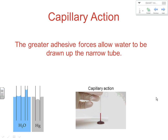Capillary action is why water wicks into towels and cloth — there are very narrow spaces inside cloth, and when water touches the edge, it creeps through via capillary action. If you lay a towel half in and half out of a tub, the water will creep up and fall down the far side by gravity, ending up on the floor. It's also useful clinically: touching a narrow capillary tube to a blood droplet causes blood to draw right up inside for testing.